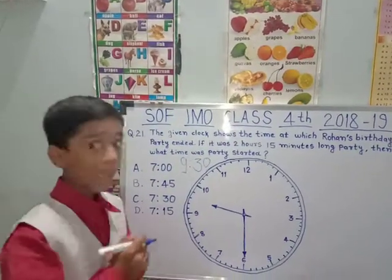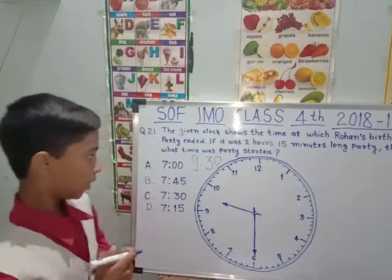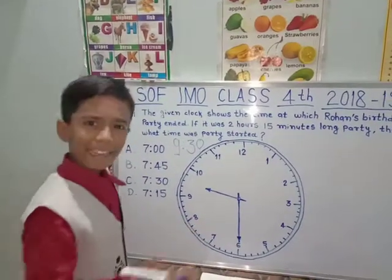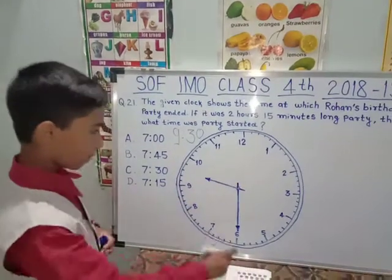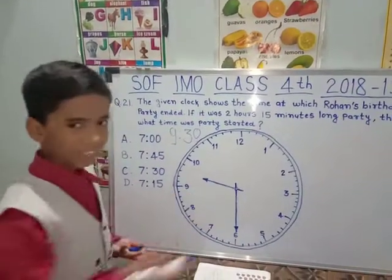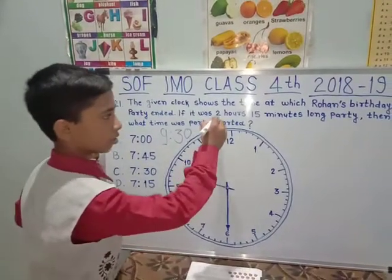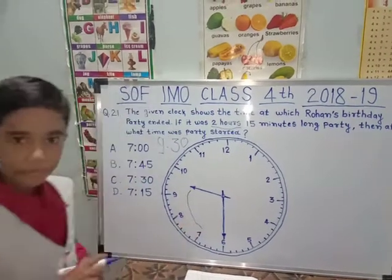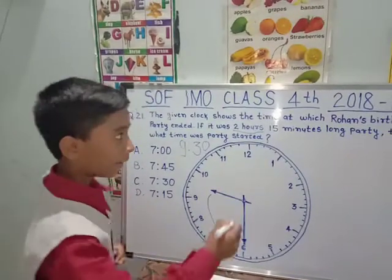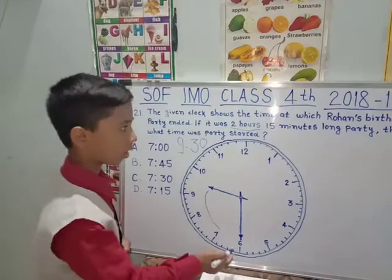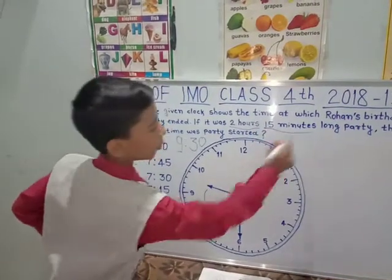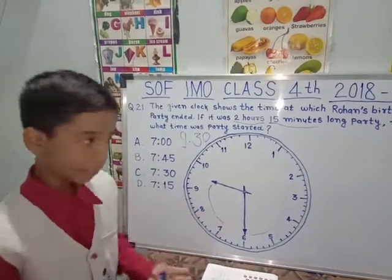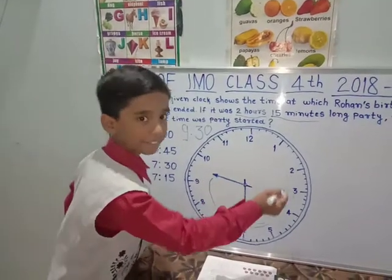So we have to find at which time the party started. We will use the clock method. Think that there is only the hour hand, and we have to subtract 2 hours from it, so it would move back to 7. Now for the minute hand — it is on 30. Subtract 15 from it, and it would become 15, which is the 3 position on the clock, because 5, 10, 15 — it comes on 3.